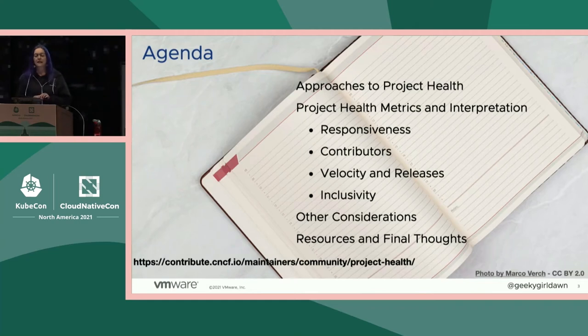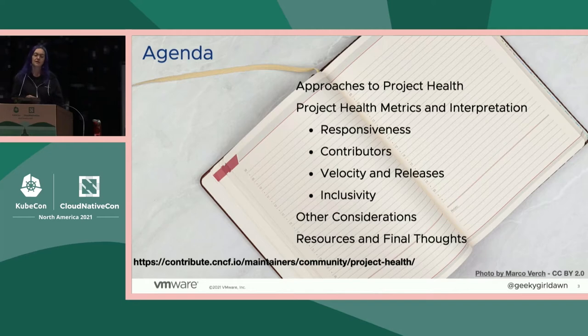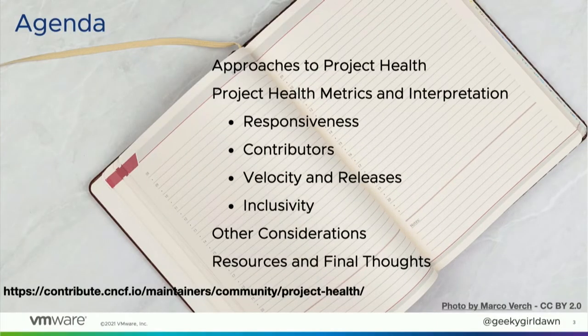One of the how-to docs that I've written along with the rest of the Contributor Strategy Tag is the Project Health Measurement Guide, which you can see on this slide. The presentation will dive into each section of that document to talk more about measuring the health of your CNCF project. I'll start by talking about some general approaches to project health before diving into several key measurements, like responsiveness, contributors, velocity, releases, and inclusivity. I'll wrap it all up with links to some resources and some final thoughts.